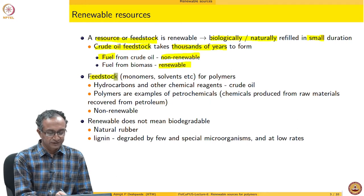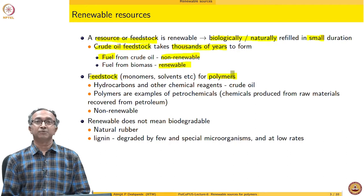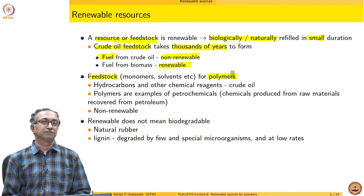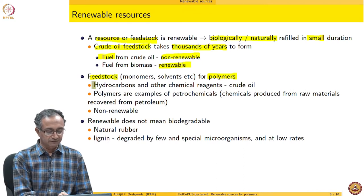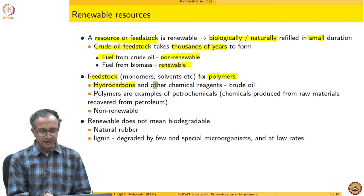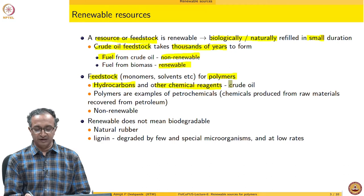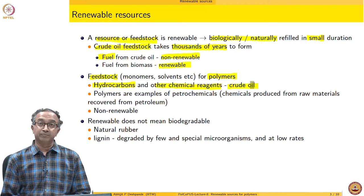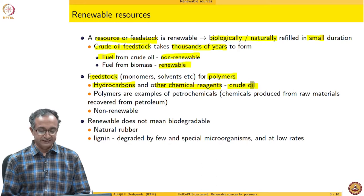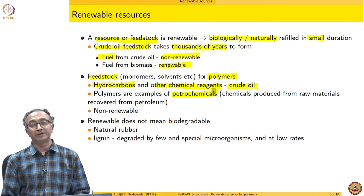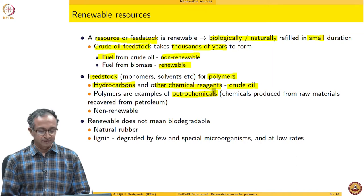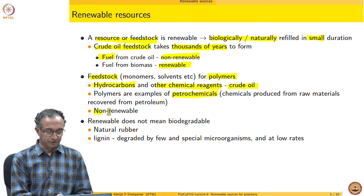Generally, the feedstock for synthetic polymers — the plastics, rubbers, and FRP we are so used to — is hydrocarbons and other solvents, reagents, and co-monomers, which all come from crude oil. So polymers are a very important example of petrochemicals, chemicals derived from petroleum, and therefore they are non-renewable.